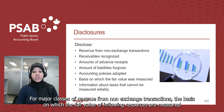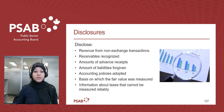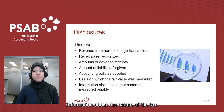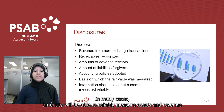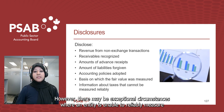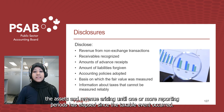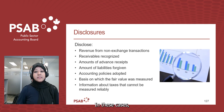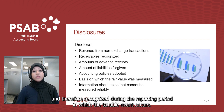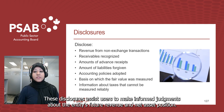For major classes of taxation revenue that the entity cannot measure reliably during the period in which the taxable event occurs, information about the nature of the tax must be disclosed. In many cases, an entity will be able to reliably measure assets and revenue arising from taxation transactions using statistical models. However, in exceptional circumstances where reliable measurement is not possible until one or more reporting periods have elapsed since the taxable event, the entity makes disclosures about the nature of those major classes of tax. These disclosures assist users to make informed judgments about the entity's future revenue and net asset position.